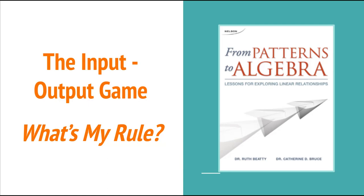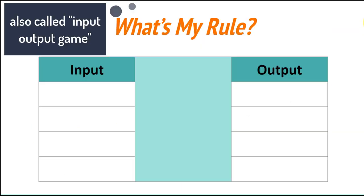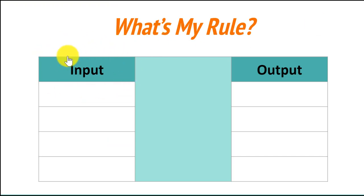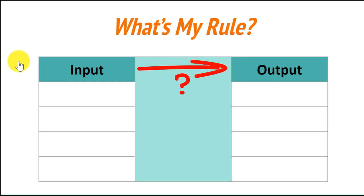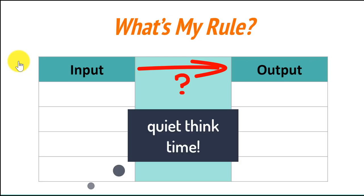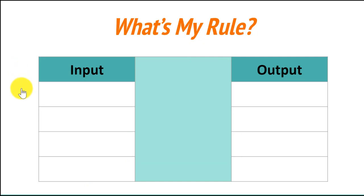The first one we're going to try is called the input-output game, or What's My Rule. When playing the input-output game with students, you're going to ask your students to give you an input — not in order, though. You're going to have in your mind the rule you're going to use to change the input to the output, and students are trying to think of what that rule is. You're going to ask them to keep that thinking quiet for a little while. Once they think they know the rule, they're going to be testing their rule to see if it's true for the next input.